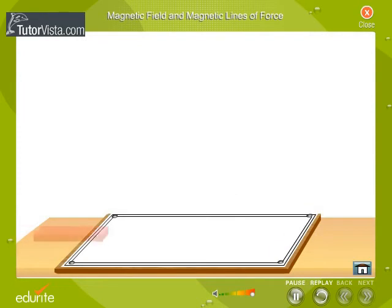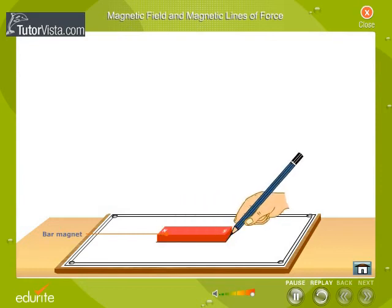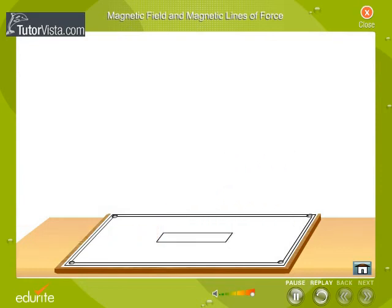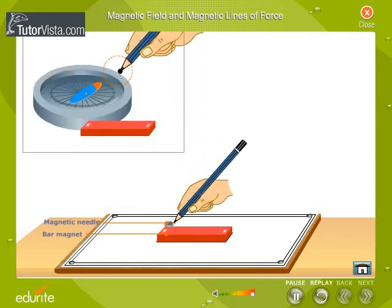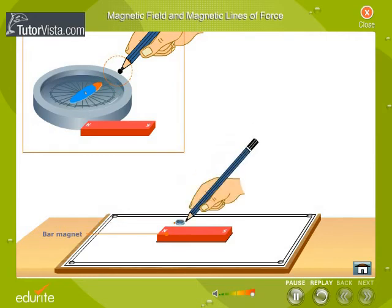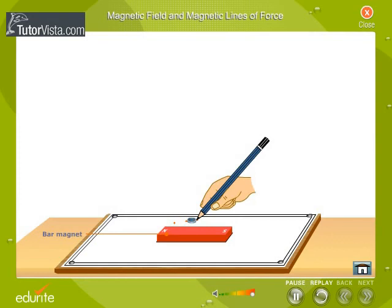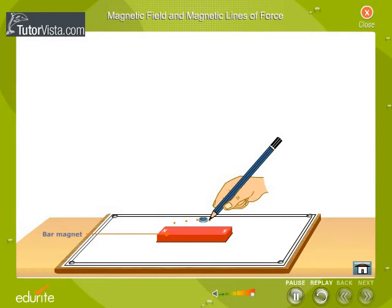Place a bar magnet on the sheet of paper. Trace the boundary NS of the bar magnet. Place a compass at the North Pole. What do you observe? The magnetic needle comes to rest in a particular direction. Mark the other end of the needle as shown here. Now move the magnetic needle in such a way that its South Pole is where its North Pole was. Mark the new position of its North Pole. Repeat this until the other end of the magnet is reached.